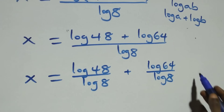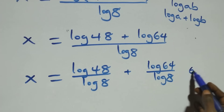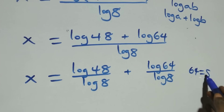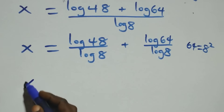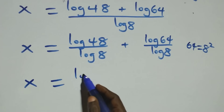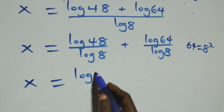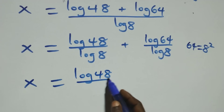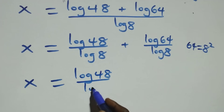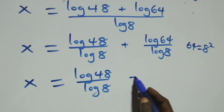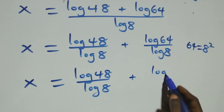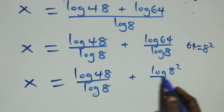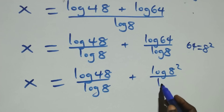Then, we can write 64 as 8 times 8, that is 8 squared. So what we have here becomes x equals log 48 over log 8 plus log 8 squared over log 8.